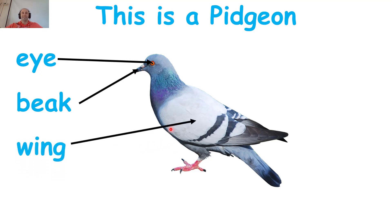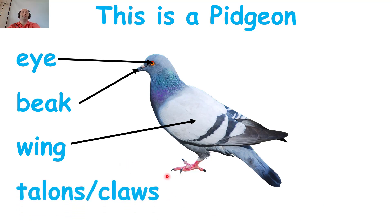The next part — a pigeon has wings. One wing — a pigeon has two wings. And the pigeon can fly with its wings. Many birds have wings and they can fly with those wings. Down here, a pigeon and many birds have talons or claws. A pigeon has claws. Some birds have talons and some birds have claws.